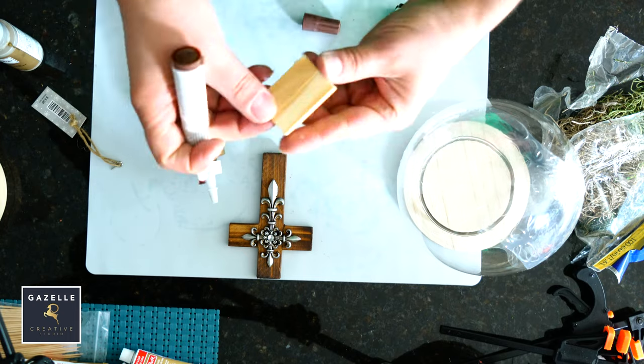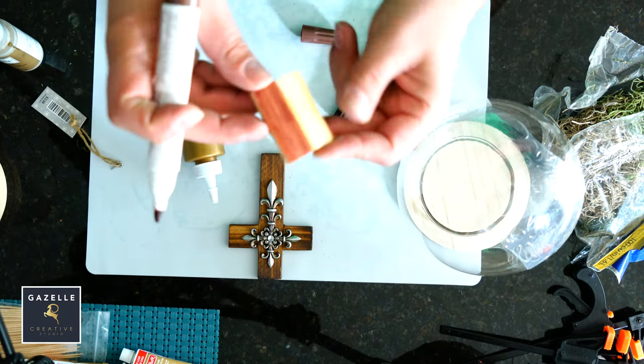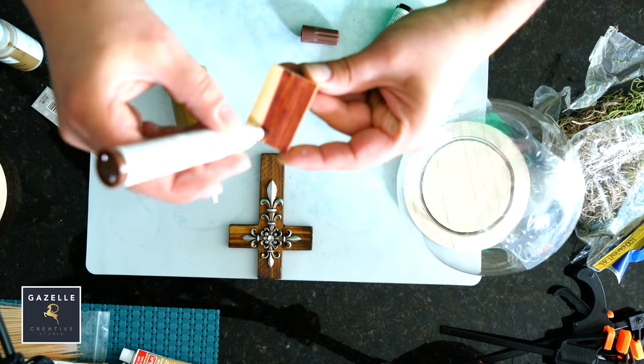I will stain the base using furniture markers to match the color of the cross as closely as possible, but this won't be very visible anyway.